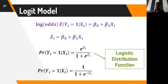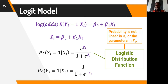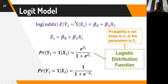The logistic distribution function is not linear in X or in the parameters because the regression equation has been exponentiated. However, the log odds itself is a linear function of both the parameters and the variables. In logistic regression, the log odds is linear in parameters and variables, but the logistic distribution function (the probability) is not linear in the variables.